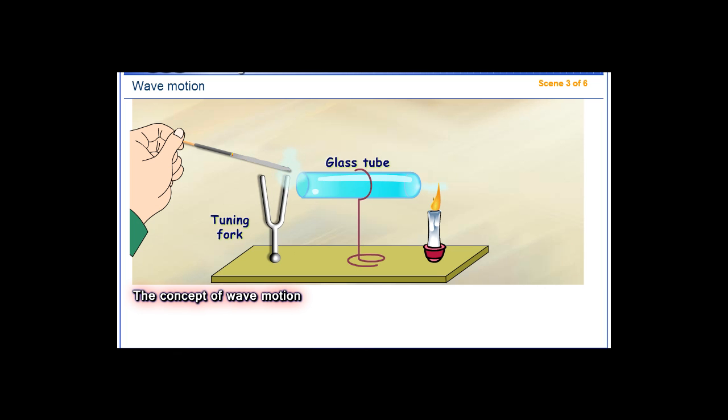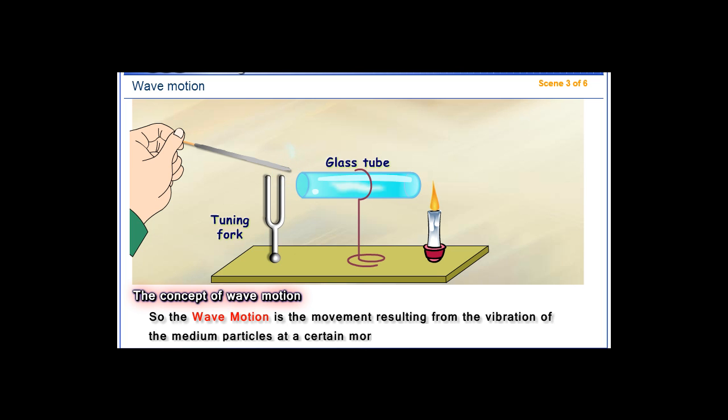From this, we can say that when the tuning fork vibrates, the produced energy is transferred in the form of sound waves. The particles of the medium do not move from their original places during transferring sound waves carrying energy to the candle flame. So, the wave motion is the movement resulting from the vibration of the medium particles at a certain moment in a specific direction.